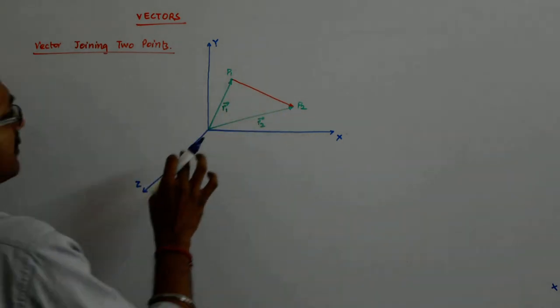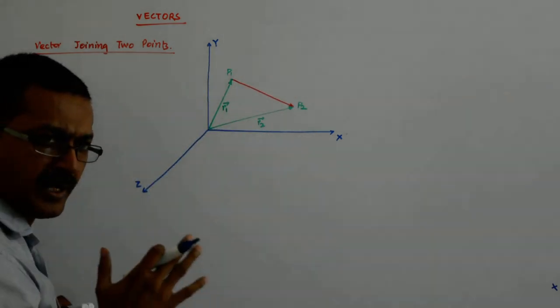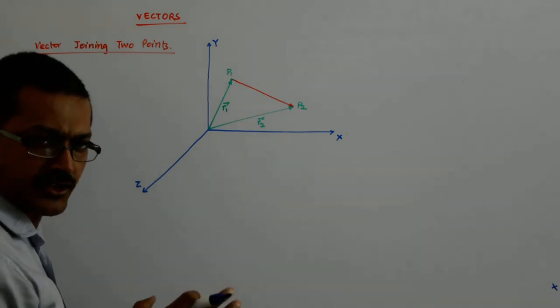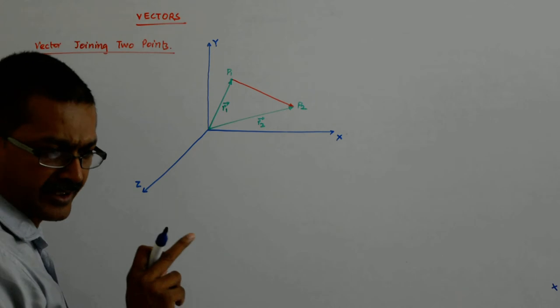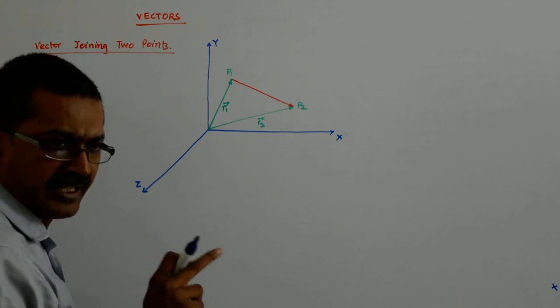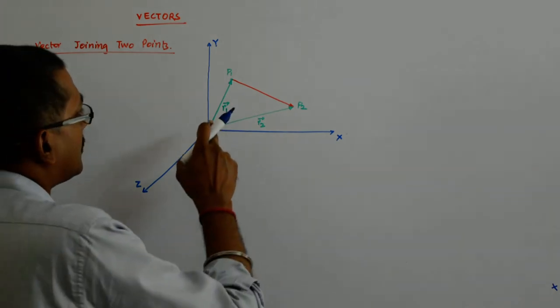Now you see with the way they are arranged right now if you go by the triangle law of addition you can see one thing. There are two vectors here arranged head to tail. Head to tail. Which of them are those two?